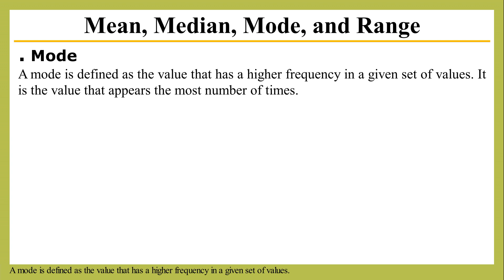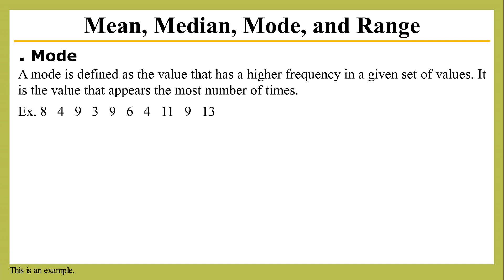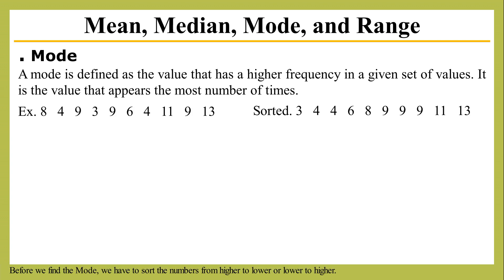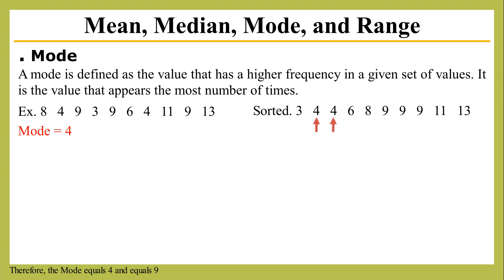A mode is defined as the value that has the highest frequency in a given data set. It is the value that appears the most number of times. This is an example. Before finding the mode, we sort the numbers from lower to higher. Therefore, the mode equals 4 and 9.